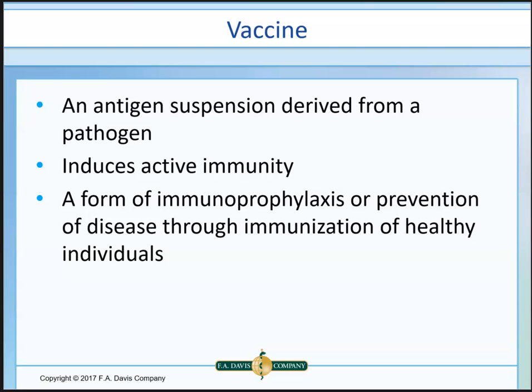A vaccine is a suspension of antigenic material — whatever pathogen we're trying to induce immunity against. It's specific for what we want to achieve and is designed to produce active immunity. Once vaccinated and active immunity is induced, the goal is to prevent disease in healthy individuals. It's a type of immune prophylactic — given before exposure so that on a second encounter, antibody production begins within 24 hours.